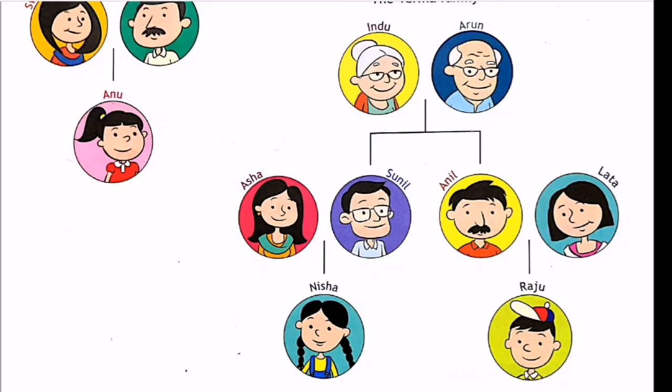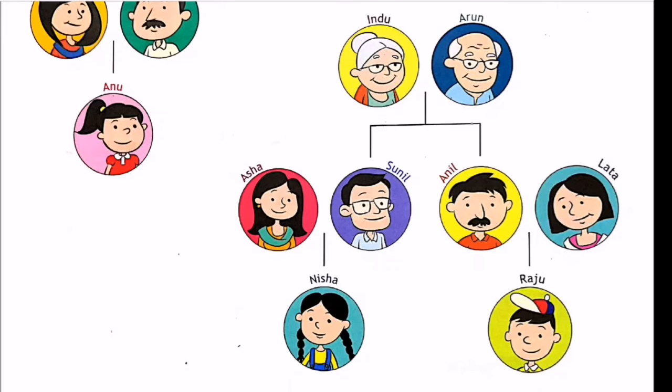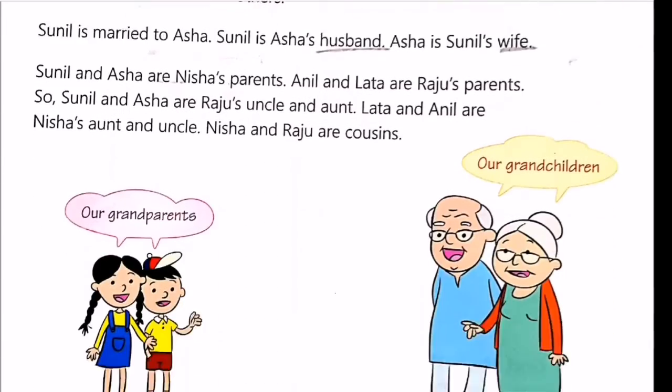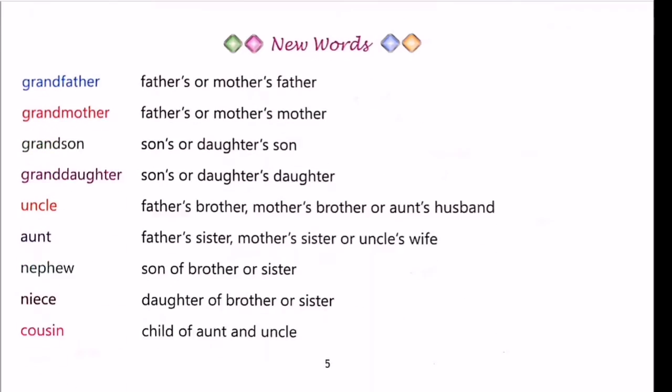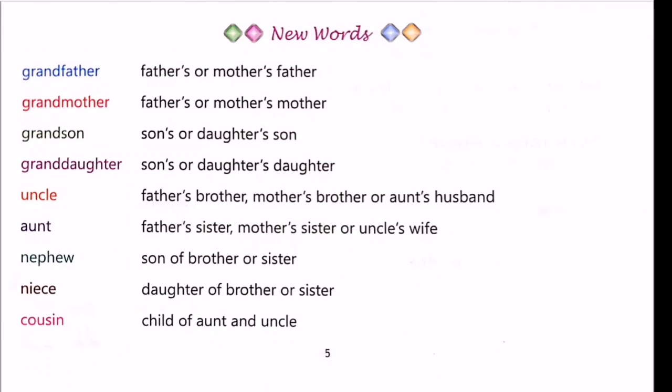From this lesson we came to know that there are two types of families: the nuclear family and the joint family. A nuclear family is a small family, whereas a joint family is a big family where we can see the parents, grandparents, uncles, aunts, and cousins. In a small family, the children live with only their parents.